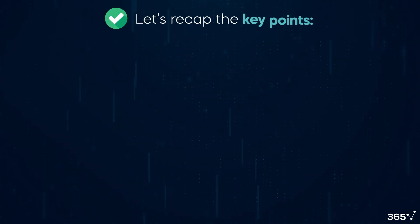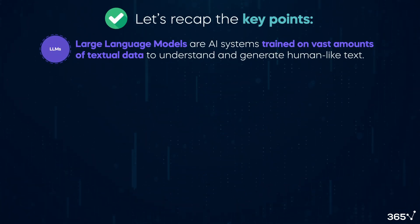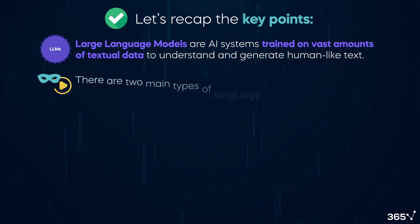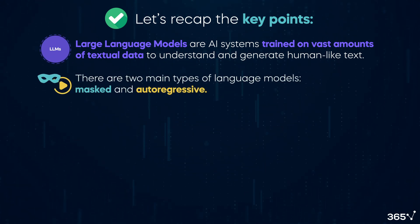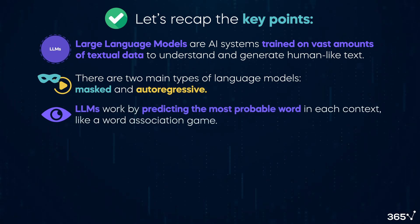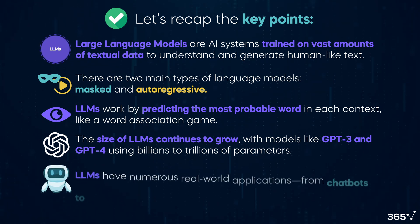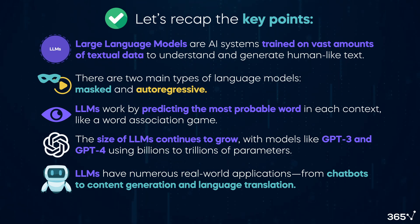Let's recap the key points we've covered in this video. Large language models are AI systems trained on vast amounts of textual data to understand and generate human-like text. There are two main types of language models: masked and autoregressive. LLMs work by predicting the most probable word in each context, like a word association game. The size of LLMs continues to grow, with models like GPT-3 and GPT-4 using billions to trillions of parameters. LLMs have numerous real-world applications, from chatbots to content generation and language translation.